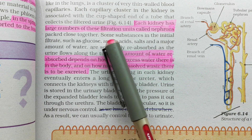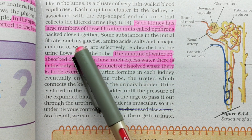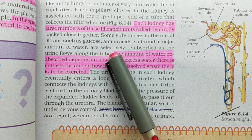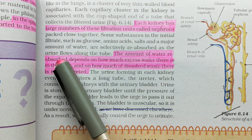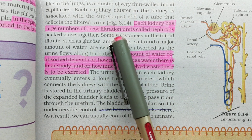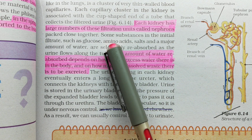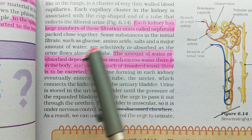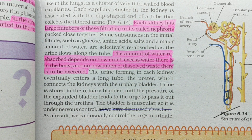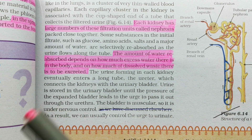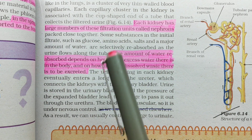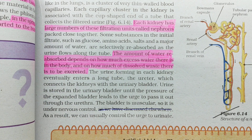Some substances in the initial filtrate, such as glucose, amino acids, salts, and a major amount of water, are selectively reabsorbed as urine flows along the tube. Kuch materials jaise glucose, amino acids, salts, aur kuch major amount of water filter hote hain — aur filter hone ke baad jo rejected materials hote hain, woh urine form karte hain.